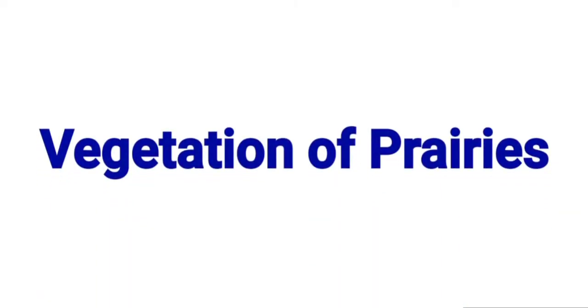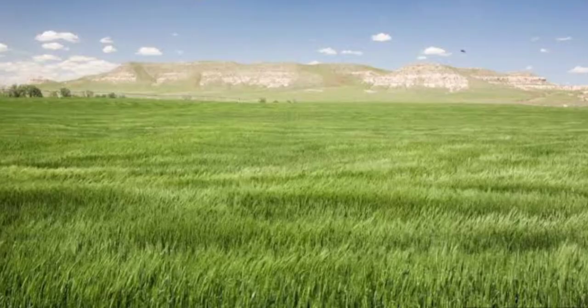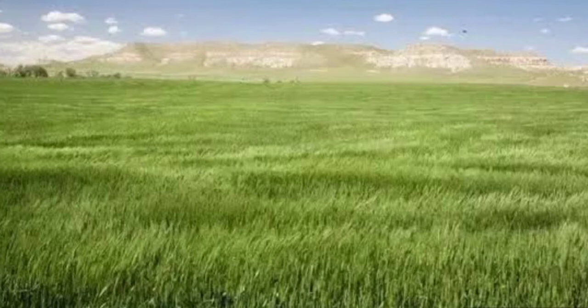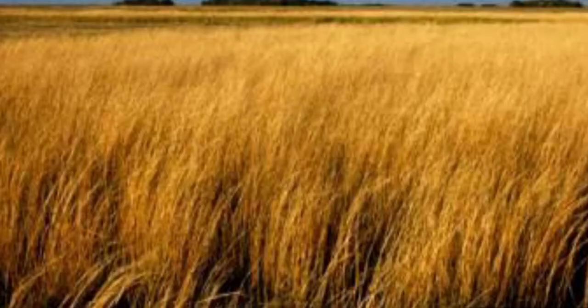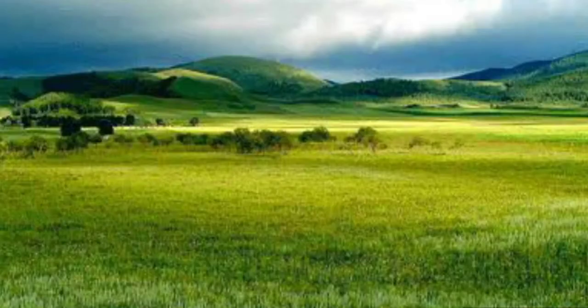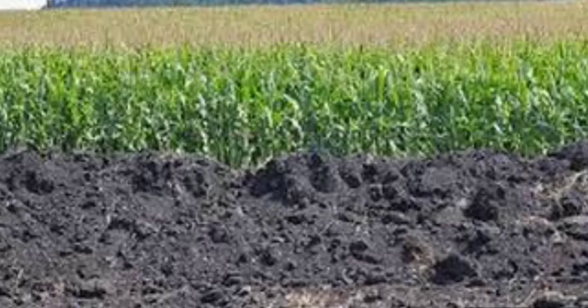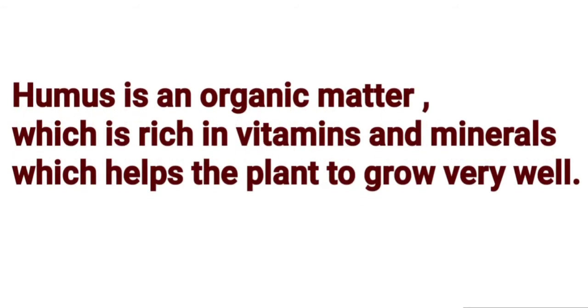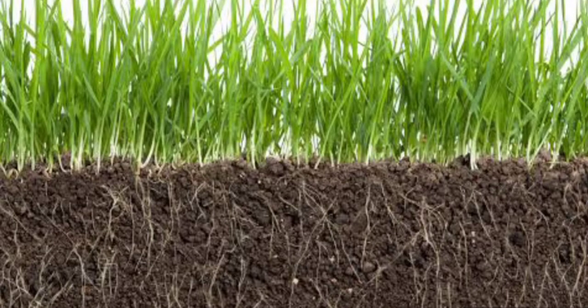Prairies is a vast stretch of flatland covered by miles and miles of grasses. Tall grasses up to 2 meters high dominate the landscape — they are green during summer and in autumn they turn brown. There are hardly any trees scattered here. The soil in these grasslands is very fertile because it has large quantities of humus, which is an organic matter rich in vitamins and minerals that helps plants grow very well.